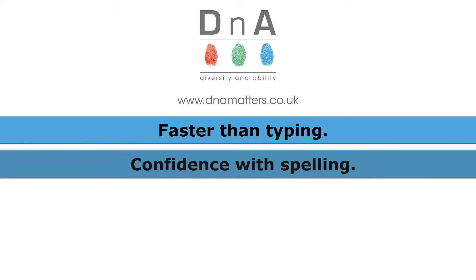Now, it's not just about speed, it's also about confidence, because the thing about Dragon is it cannot make a spelling mistake. It might choose the wrong word, but it can't ever spell words incorrectly, unless you've actually added incorrect spellings to its vocabulary.